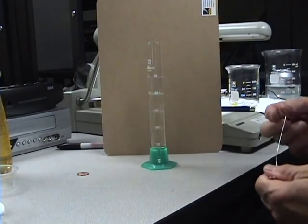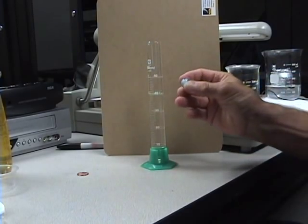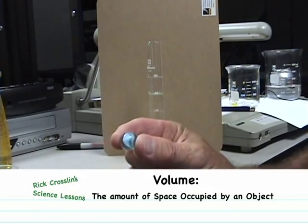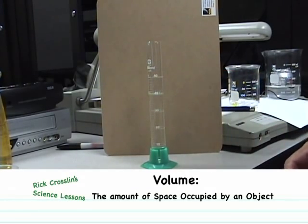That's a measure of volume, and I have here an irregular shaped object, a marble. I'm going to see if we can find the volume of this marble. We're starting at 40 milliliters.